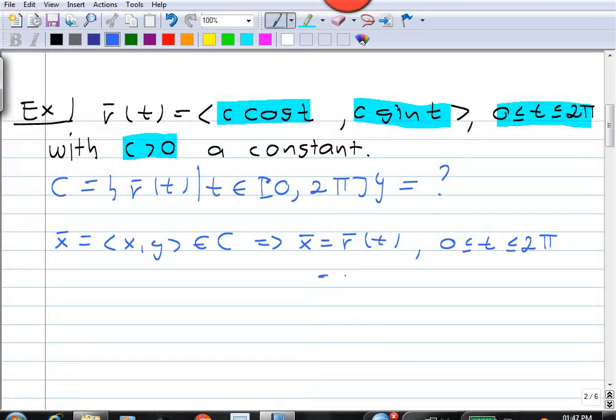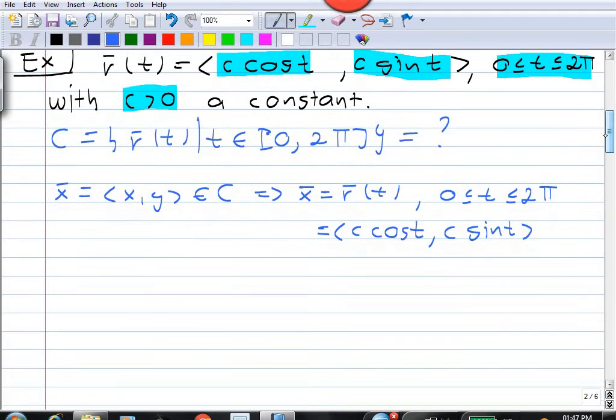And that means x is of the form first component c cos t, second one c sin t. Now what can we say about this point x?